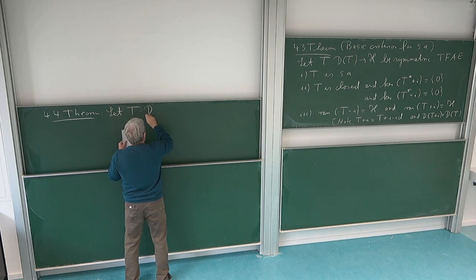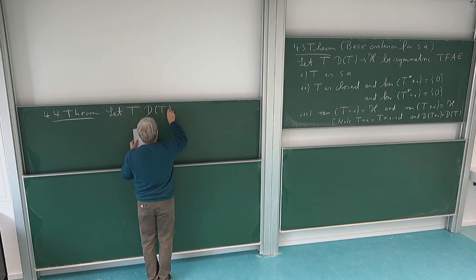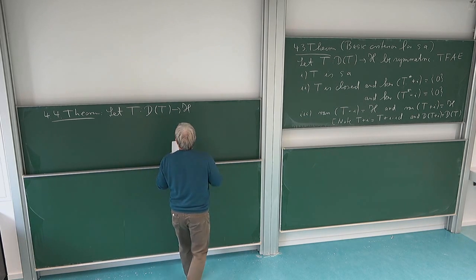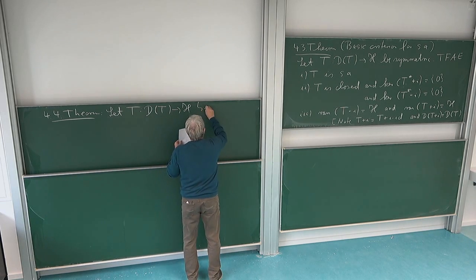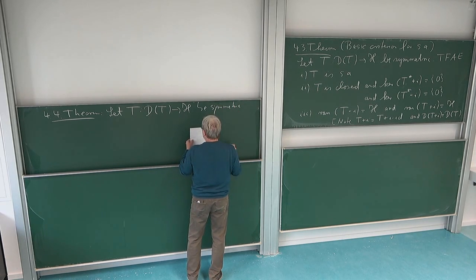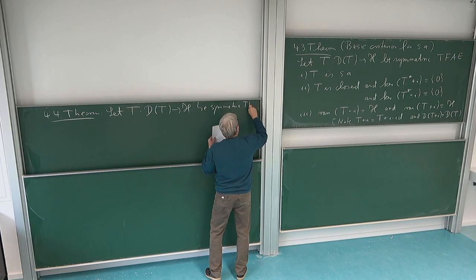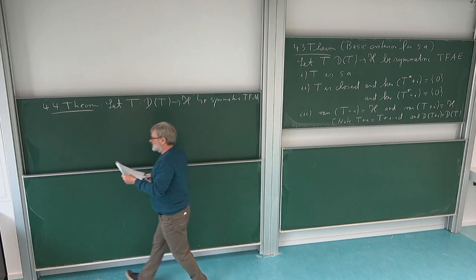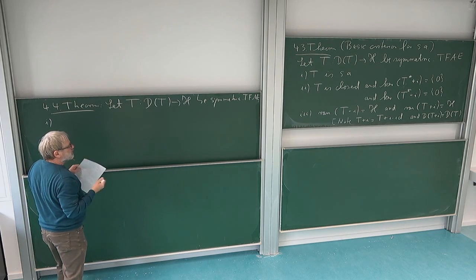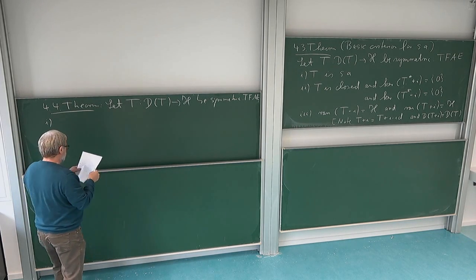So now I have an operator. The situation is as before - I have an operator which should be symmetric, so we know it's closable. And then, again, I'm claiming that a few things are equivalent. The first thing now is that we want our operator to be essentially self-adjoint.